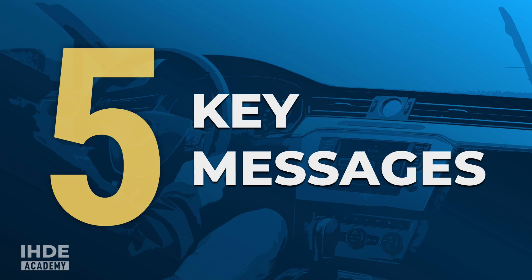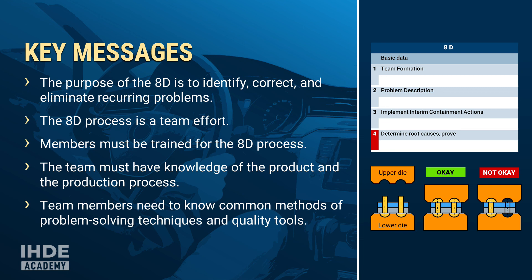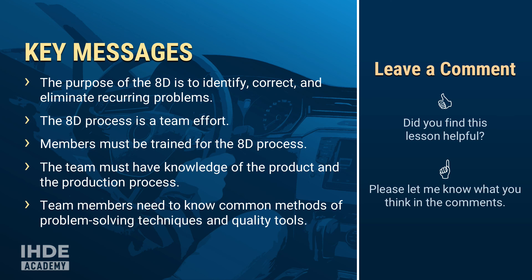That was a lot of new information. To conclude, here are the 5 most important key messages. The purpose of the 8D is to identify, correct, and eliminate recurring problems. The 8D process is a team effort and members must be trained for it. The team must have knowledge of the product and the production process, and team members need to know common methods of problem-solving techniques and quality tools. If you found this lesson helpful, please let me know and leave a comment. Thank you, take care and see you next time.